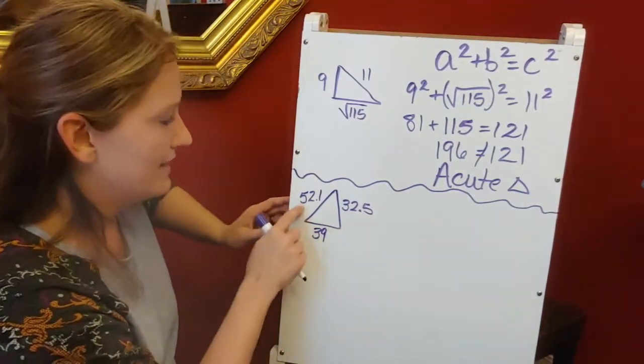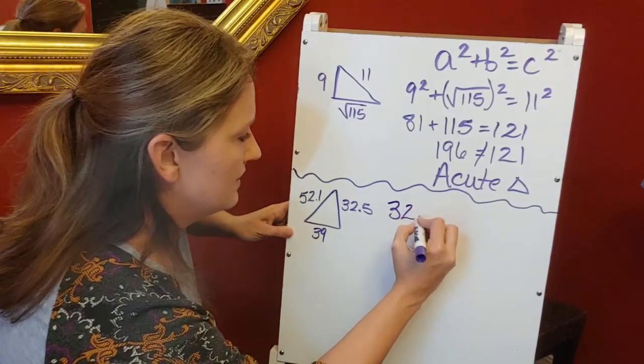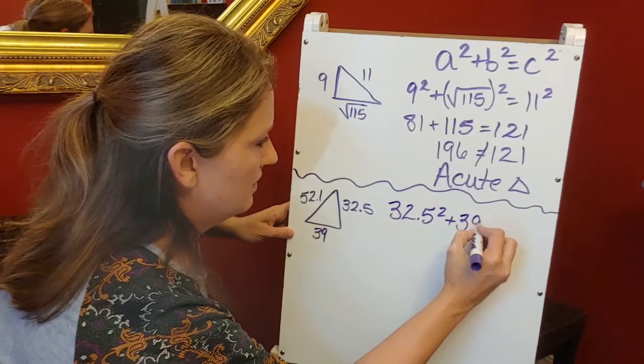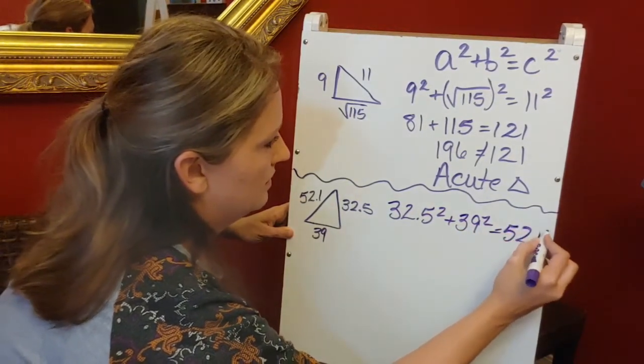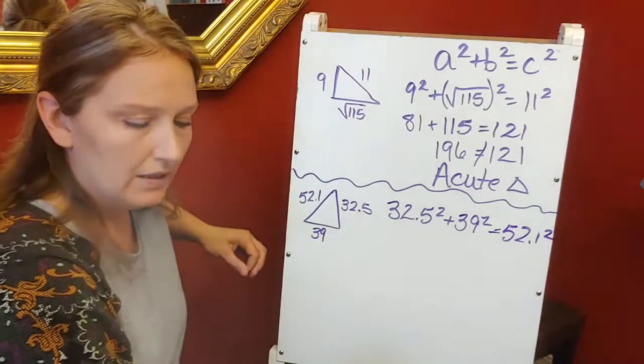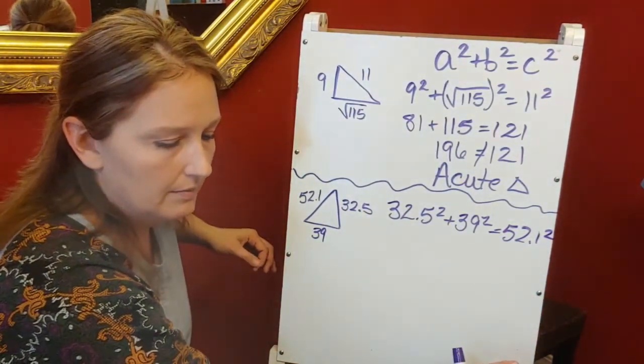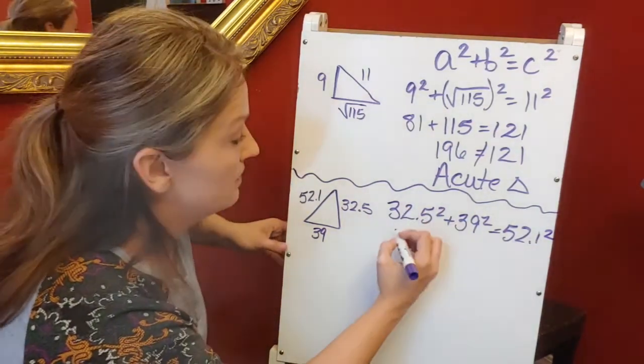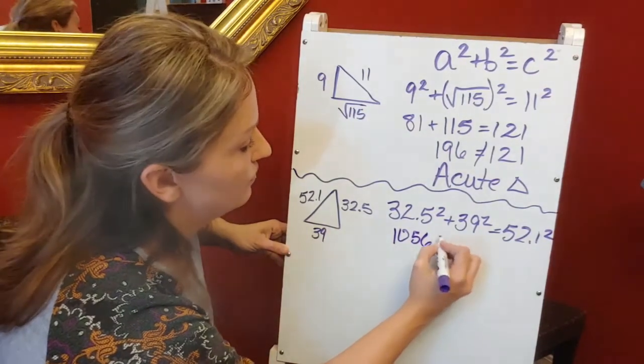My longest side is 52.1, so I'm going to plug these others into the equation. If I square these and add them together, 32.5² is 1056.25.